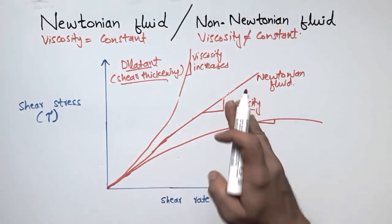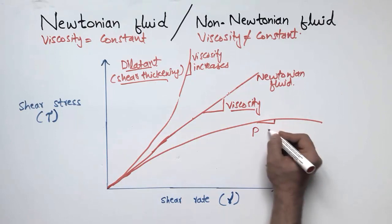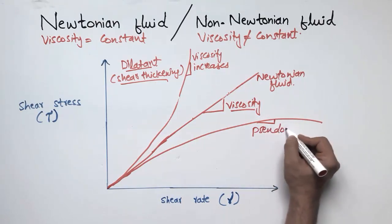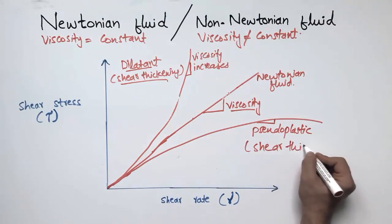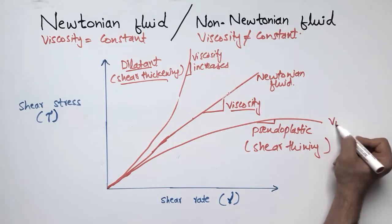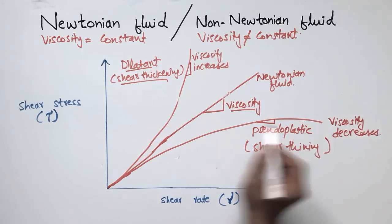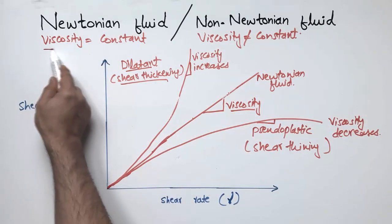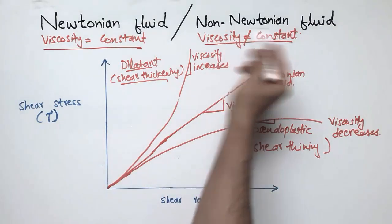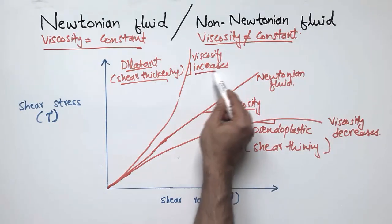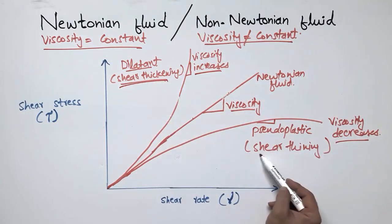Now, if by applying shear stress the viscosity is decreasing, we call this type of fluid also non-Newtonian, but it is called pseudo-plastic. The behavior of this fluid is called shear thinning, because the viscosity decreases with applying shear stress. This is the main difference between Newtonian and non-Newtonian fluid: in Newtonian fluid viscosity is always constant, while in non-Newtonian fluid the viscosity is not constant. We have two subtypes: increase of viscosity is shear thickening, and decrease of viscosity is shear thinning.